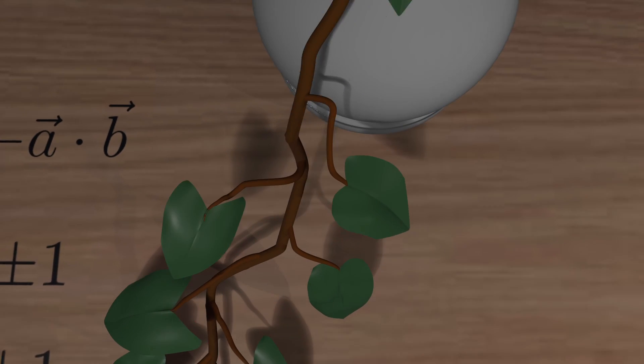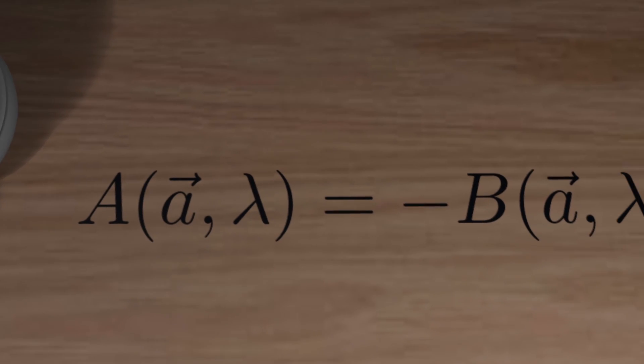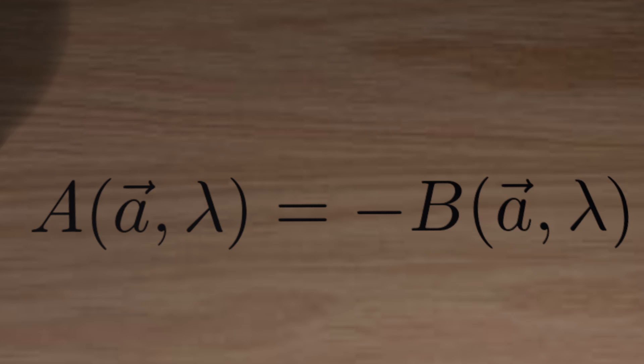Now notice that when the detectors are perfectly aligned, we have that A of A Lambda is equal to minus B of A Lambda, in the A direction, regardless of the value of Lambda.